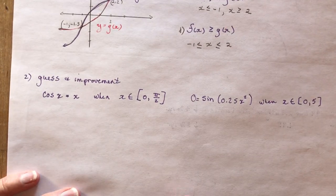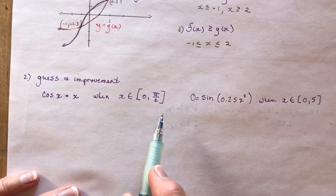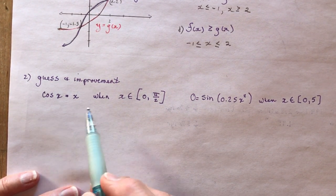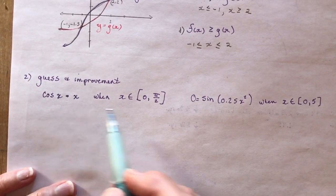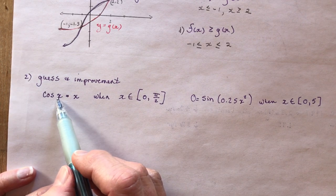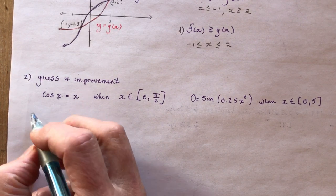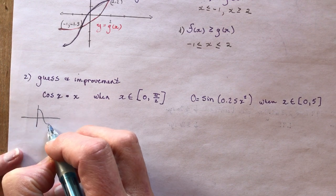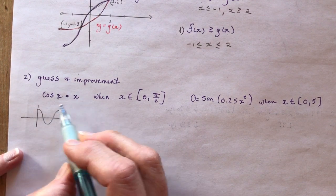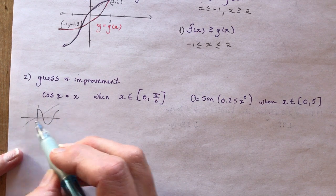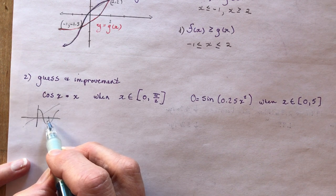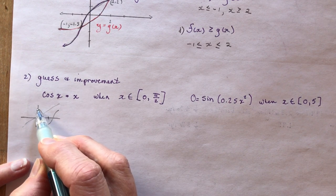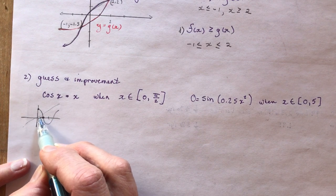Number two is a guess-and-check question. You want to think a little bit before you start — what values make sense? I want to know where cos(x) equals x, so I'll make a quick sketch: here's cos(x) equal to x, and we'd have a line between 0 and π/2, which is where cos(x) equals 0.